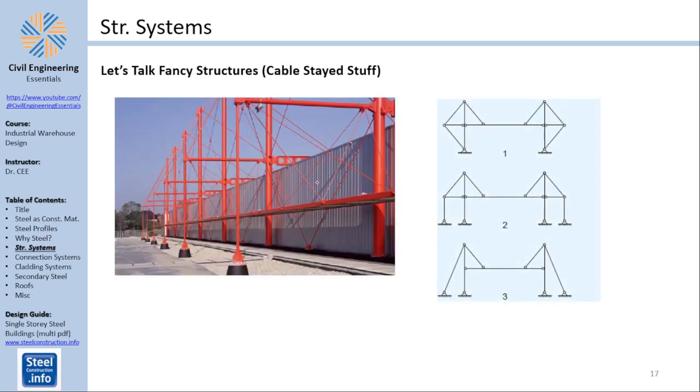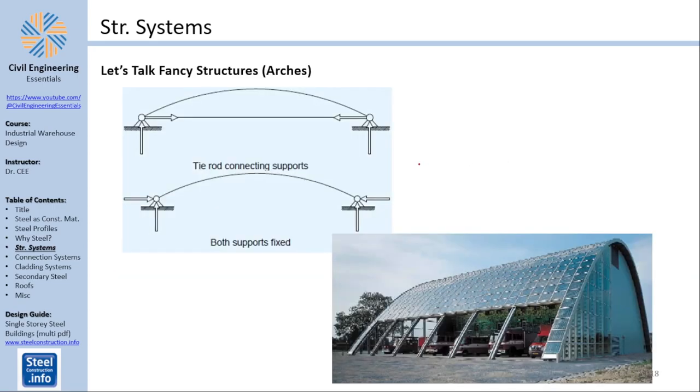Now fancy stuff. I will not talk about this but keep in mind that those fancy cool warehouses do exist where you have cables and cable-stayed things. Arches also are interesting. You could have a tie rod connecting the supports which will decrease the amount of horizontal reaction required or you could simply have no tie rod. In this case the full horizontal reaction needs to be carried by the support. This structure seems to not have any tie rod which means that the full horizontal reaction needs to be carried by those supports.